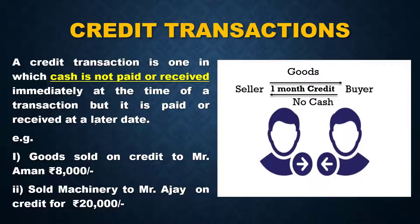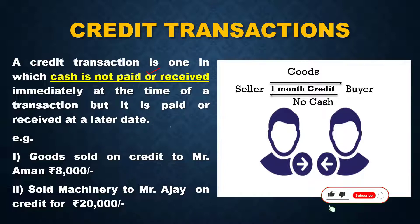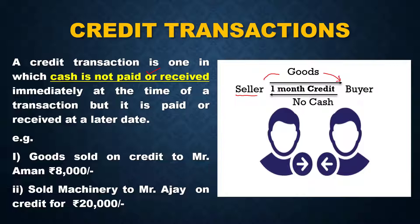A credit transaction is one in which cash is not paid or received immediately at the time of a transaction, but it is paid or received at a later date. For example, a seller sells goods to a buyer on credit — suppose the credit period is one month.